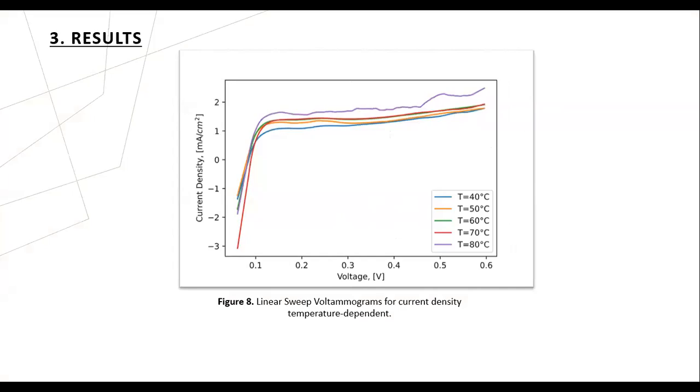Five linear sweep voltammetry tests were performed for a temperature range between 40 and 80 degrees centigrade, in intervals of 10 degrees centigrade. Figure 8 shows the results obtained, which follow a typical behavior of linear sweep voltammetry. The limiting current for the set of curves is between 0.9 and 1.4. This occurs approximately at 0.1 voltage and is associated with the hydrogen oxidation reaction.